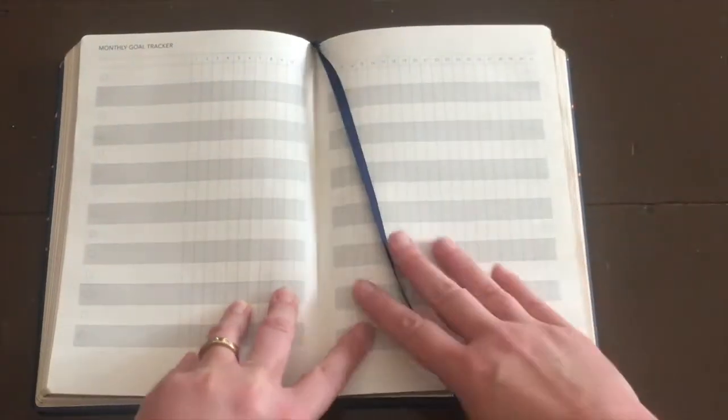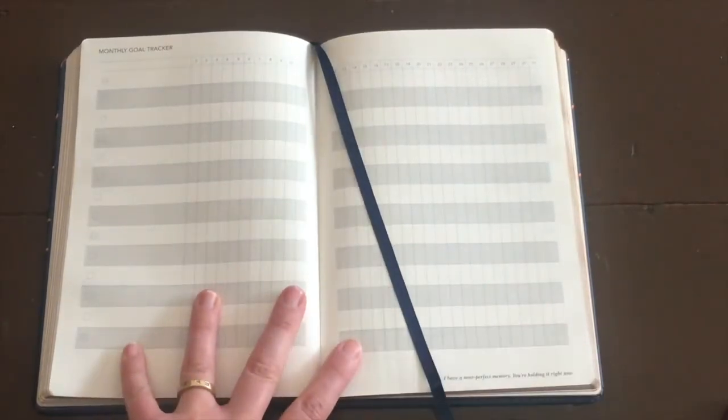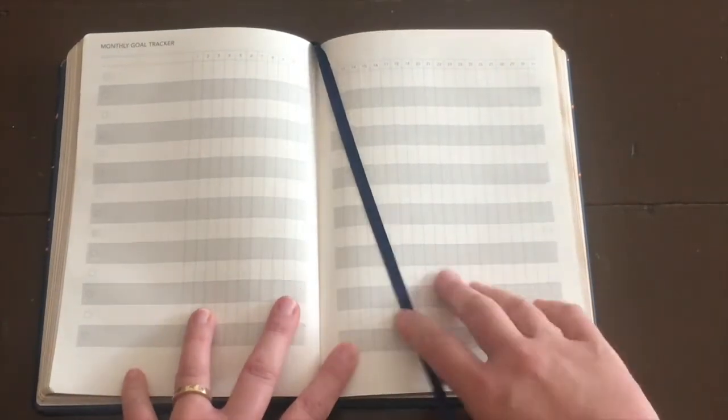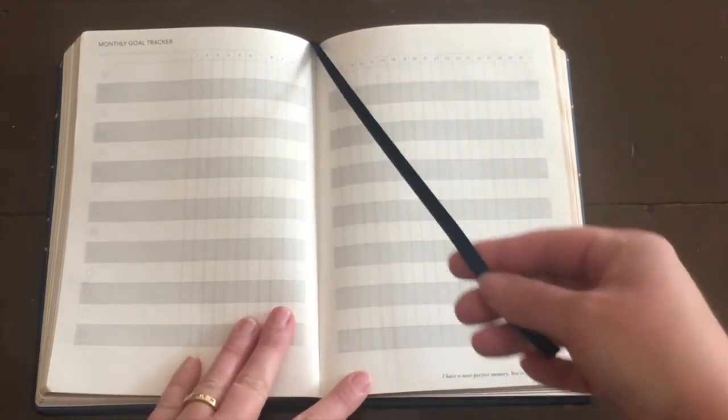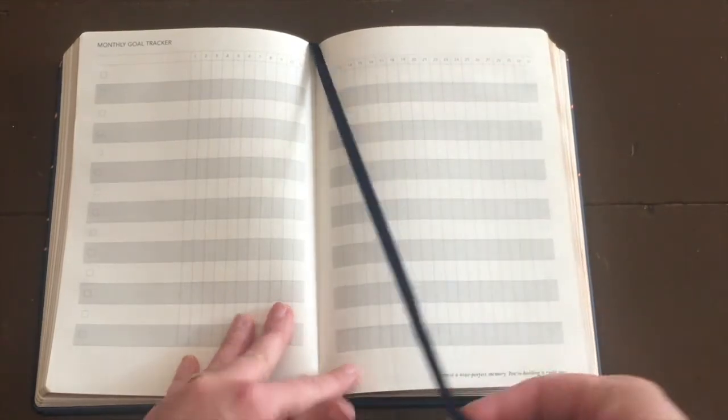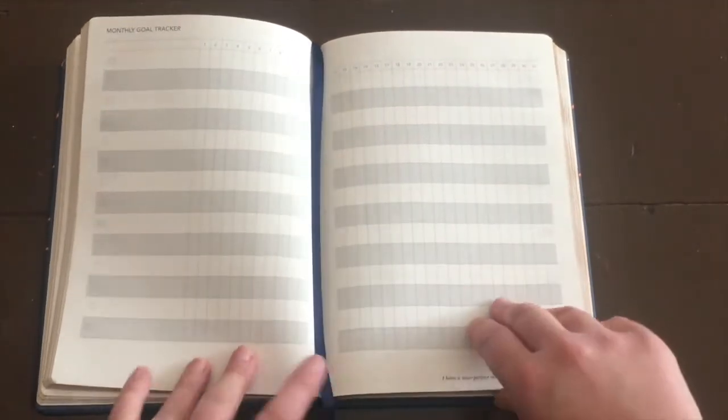This one has just one ribbon, so it's still handy to use. You can mark your page wherever you're up to in the year so that you're not flicking through and bending pages and rushing through, trying to find where you're up to. It's just a nice little added bonus.